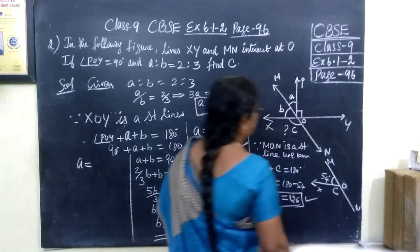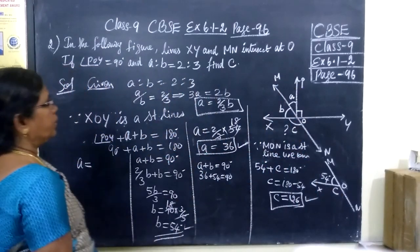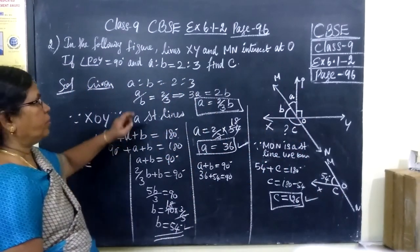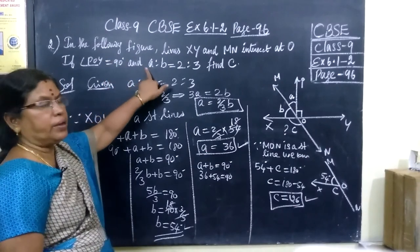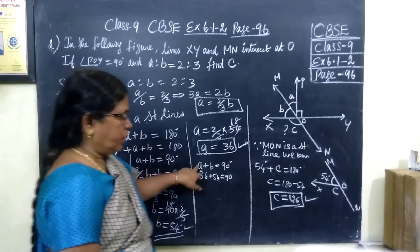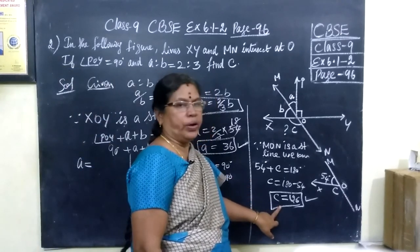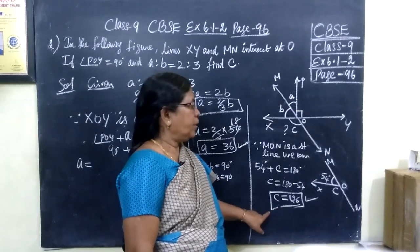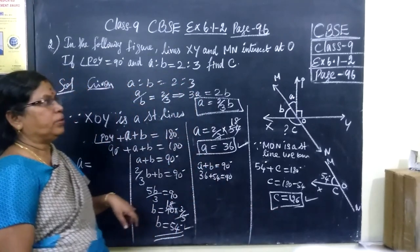So C we have found. So actually, we want to find C. For that, you are using A is to B equals 2 is to 3 property. Find A and B, and finally you are getting the answer 126 degrees. So in the next class, we see question number 3.